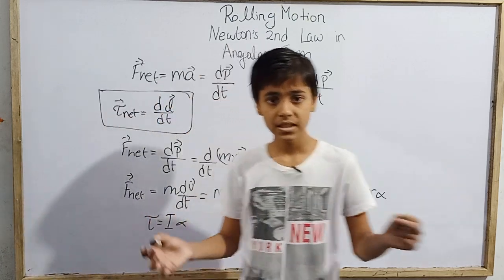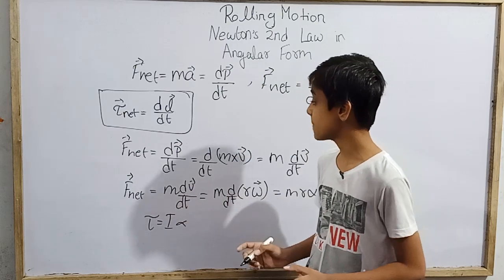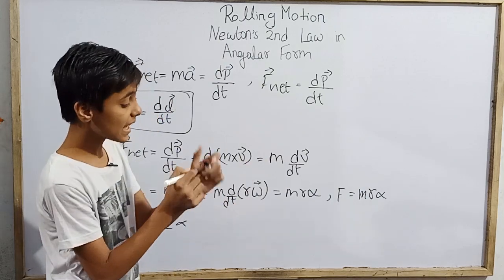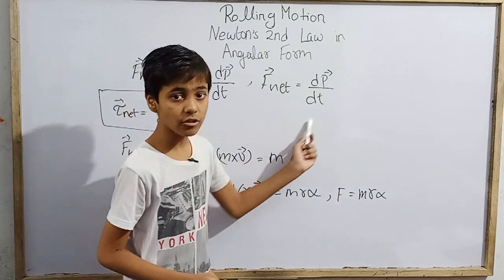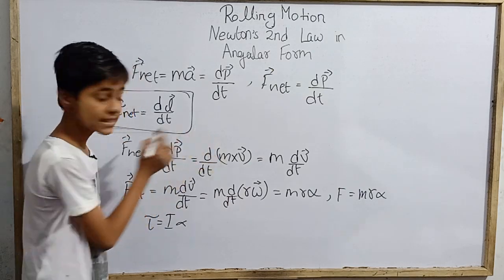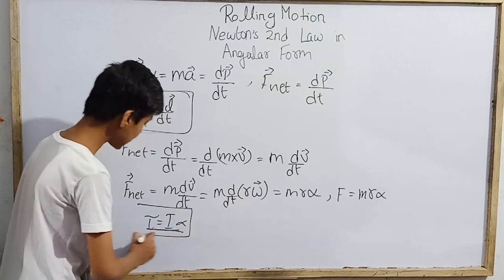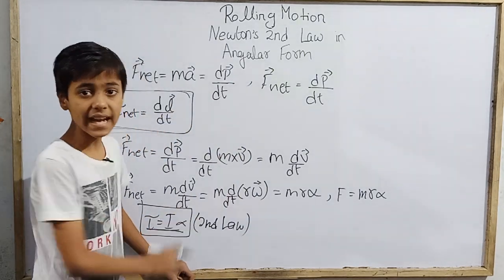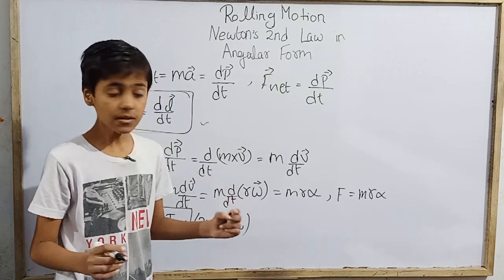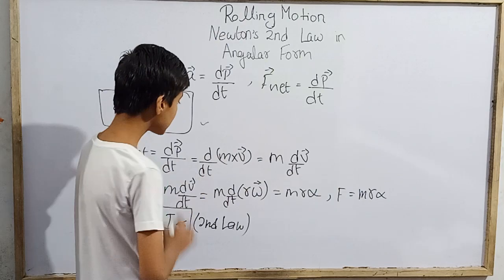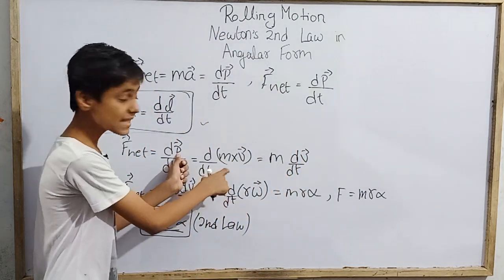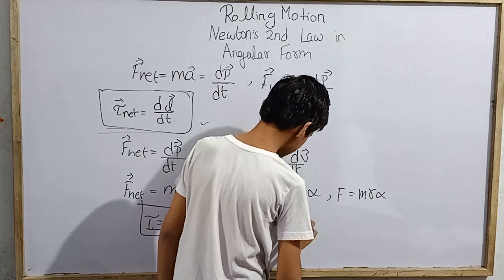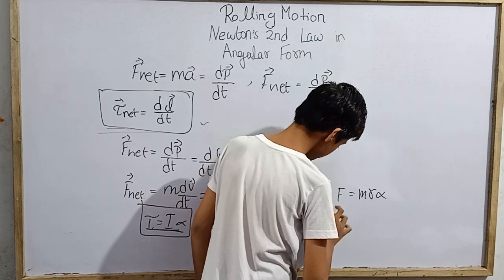We have obtained the equation τ = I·α, which can be applied directly to rotational motion as well. But now what we need to do is relate this to angular momentum, because we haven't yet obtained the formula τ = dL/dt. This is also Newton's second law, but expressed in terms of moment of inertia and angular acceleration. We need it in terms of angular momentum. So let's go back to F_net = dp/dt.